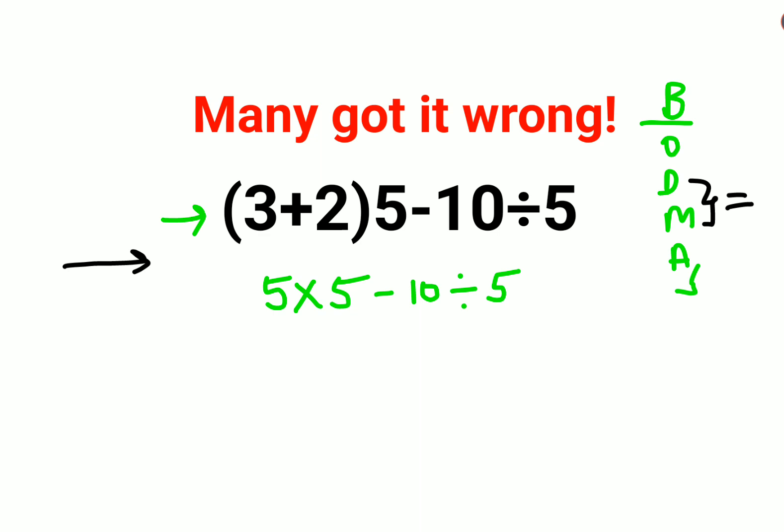So 5 into 5 gets you 25 minus 10 divided by 5, that gets you 2. So here the answer comes out to be 23.